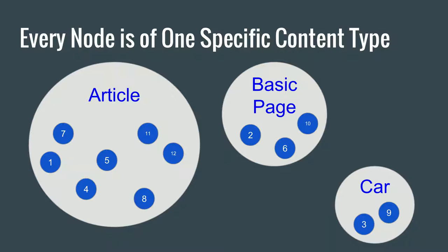Every node has an associated content type. It is possible to have content types without nodes, but that's not useful. In this example, node ID 1 is an article, node ID 2 is a basic page, node ID 3 is a car, and you can have many nodes of the same content type. Each node can have one and only one content type, and once you create a node, you cannot change the content type.